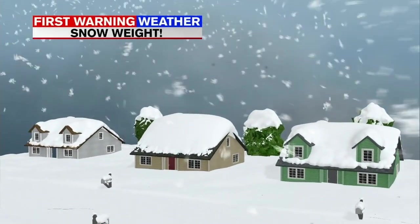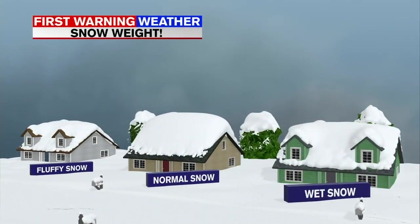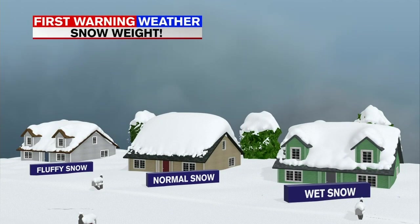Sometimes snow is light and fluffy and sometimes it's heavy and wet — what gives? Temperature. Wet snow occurs right at 32 degrees, while normal snow occurs around 30 degrees, and fluffy snow occurs at 25 degrees or below. So, the lower the temperature drops, the lighter and fluffier the snow becomes.